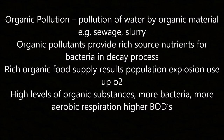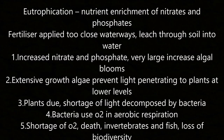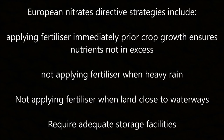Organic pollution is the pollution of water by organic material such as sewage or slurry. Organic pollutants provide a rich source of nutrients for bacteria in the decay process. A rich organic food supply results in a population explosion of bacteria, using up oxygen. High levels of organic substances mean more bacteria, more aerobic respiration, and a higher biochemical oxygen demand (BOD). Eutrophication is caused by the enrichment of water with nitrates and phosphates from fertilisers applied too close to waterways. Increased nitrates and phosphates cause large algal blooms; extensive algal growth prevents light penetrating to lower levels; plants at lower levels die from light shortage and are decomposed by bacteria, which use up O2 through aerobic respiration, causing a shortage of O2 and death of vertebrates, leading to loss of biodiversity.